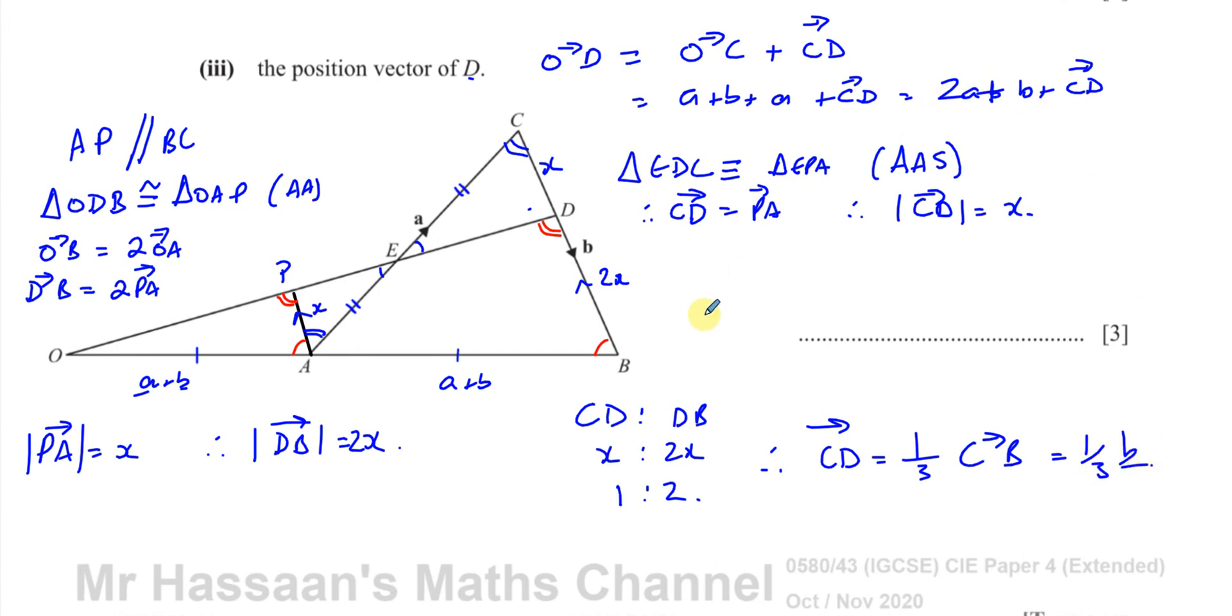So, I know that, therefore, I can say that CD is 1 third, because that's one part and that's two parts, 1 third of the whole vector C to B. Which is 1 third of the vector B. So, now I can say that O to D is equal to O to C plus C to D. And we know O to C is 2A plus B. And we know C to D is 1 third of B. Adding those together, you get 2A plus, that's 1 and 1 third, which is 4 over 3B. And that's an alternative way, also, of answering this part 3 of this question.